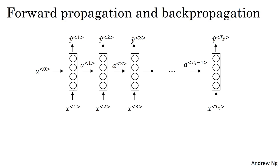You've seen how for forward prop, you would compute these activations from left to right as follows in the neural network, until you've output all of the predictions. In backprop, as you might already have guessed, you end up carrying backpropagation calculations in basically the opposite direction of the forward prop arrows.